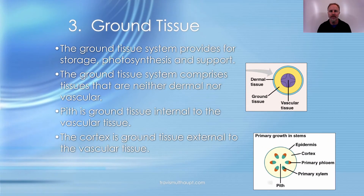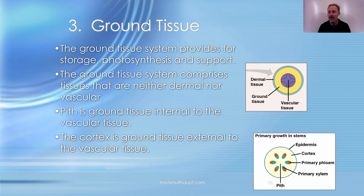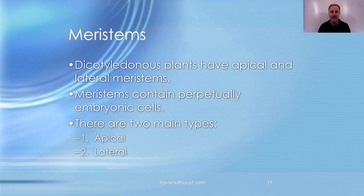The ground tissue provides storage, support, and photosynthesis. It is neither dermal tissue nor vascular tissue. The pith refers to ground tissue internal to the vascular tissue, and the cortex is ground tissue external to the vascular tissue.